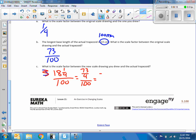This equals 73 over 4 times one over 100, which equals 73 over 400. So the scale factor between the new scale drawing I drew and the actual trapezoid was 73 over 400.